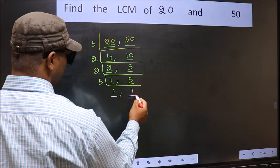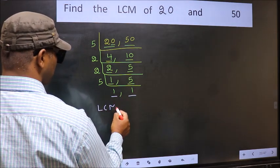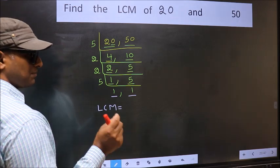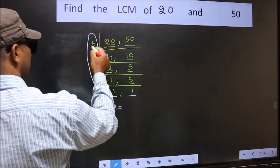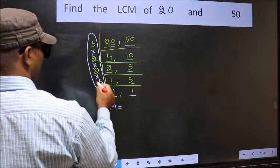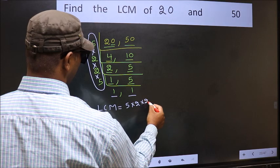So we got 1 in both the places. So our LCM is, LCM is the product of these numbers. That is 5 into 2 into 2 into 5.